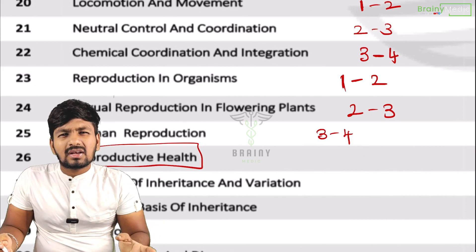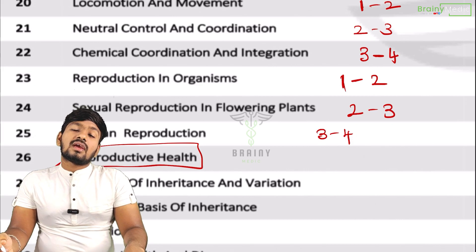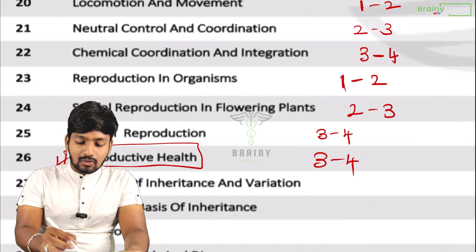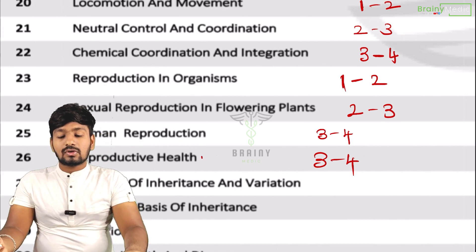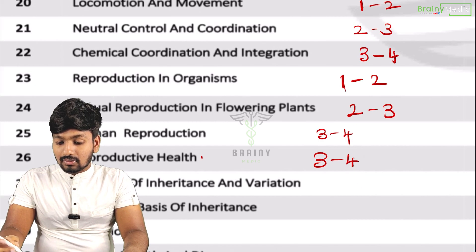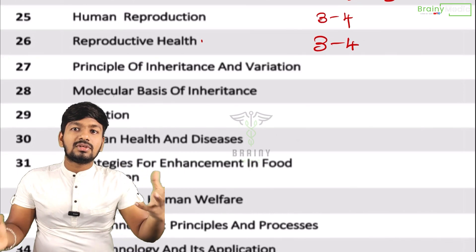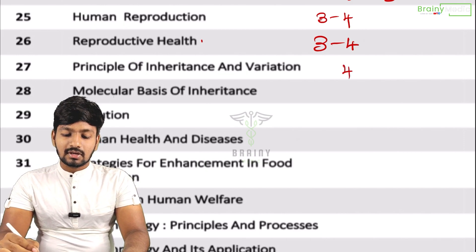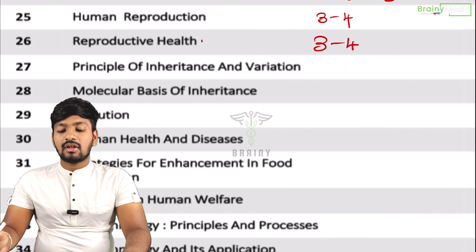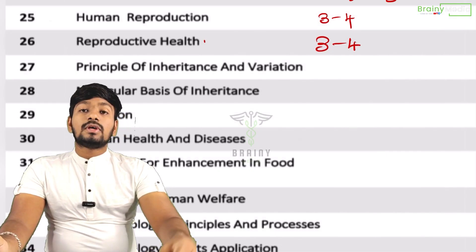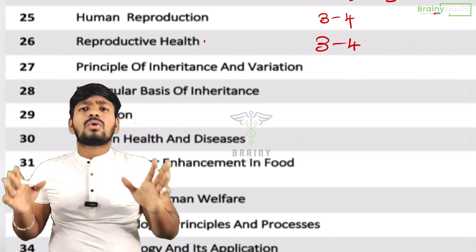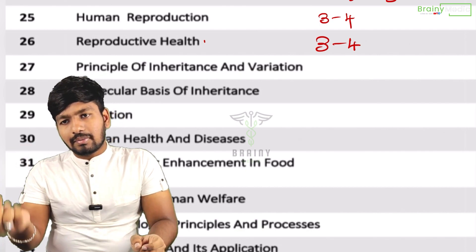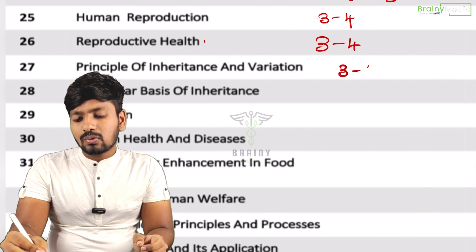Here we have three to four questions. Reproduction is very important. Next, principles — this is one of the most important topics. Principles of Inheritance and Variation: sometimes four questions. There are maximum five questions; you can take a three to five ratio.